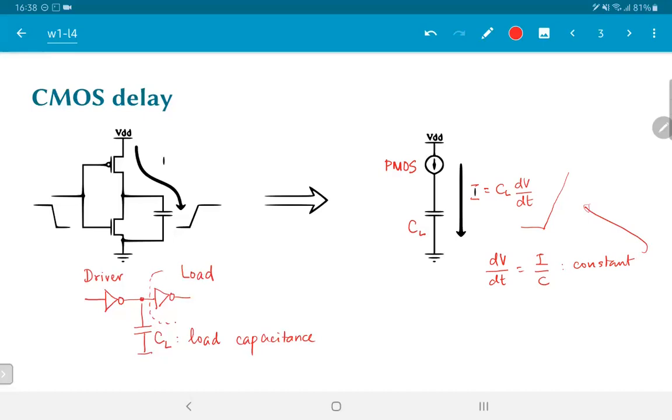Now of course the output voltage cannot keep on increasing. As soon as the output voltage reaches VDD, effectively the PMOS would stop conducting and therefore no further current would flow, which means that the output would then clip off. In practice we would have a more graded transition, but as a first order approximation we can treat it as a simple ramp followed by a clipping.